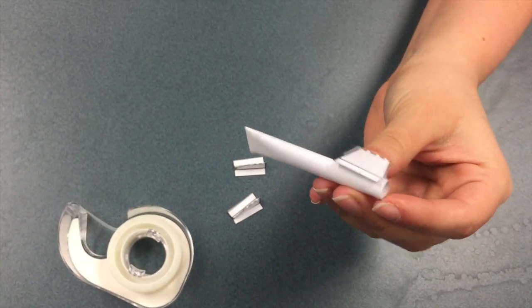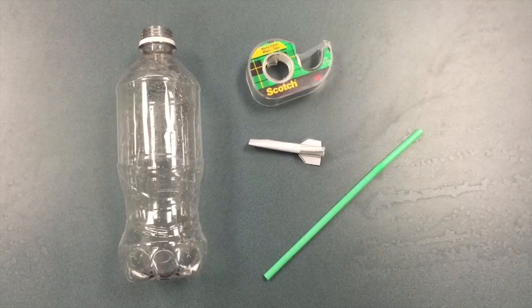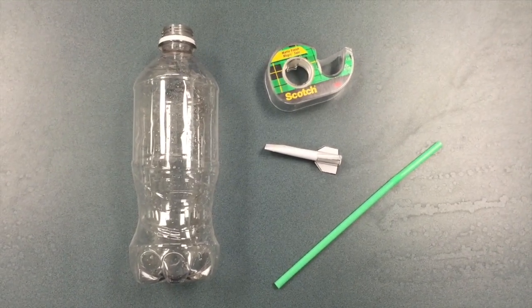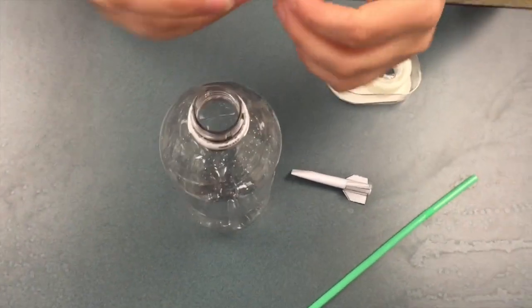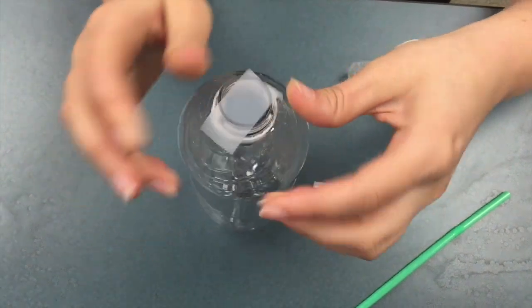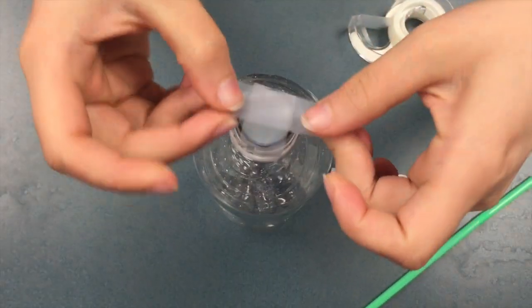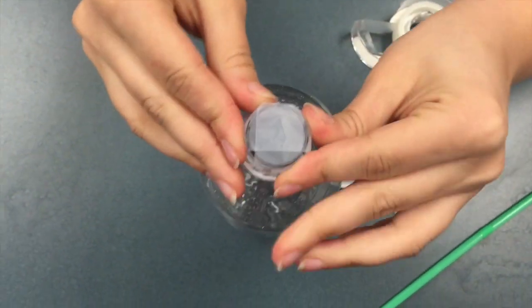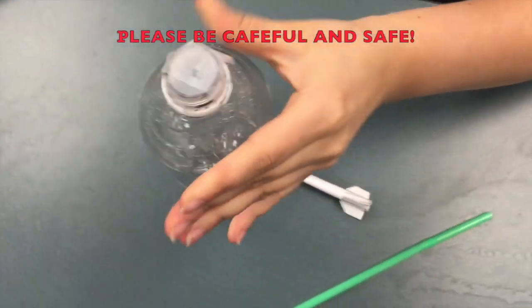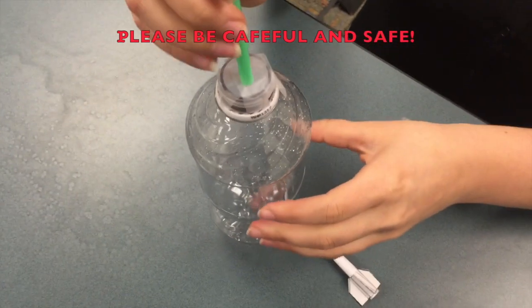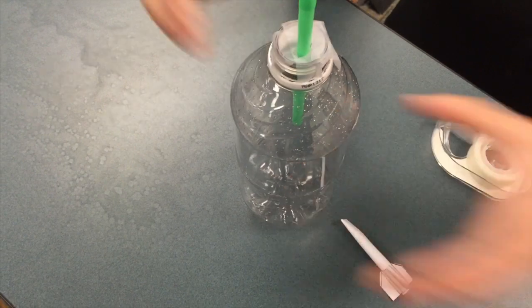So now we'll make our launcher. You take your empty water bottle, some tape, you cover the nozzle of the water bottle with your tape, just two or three pieces should do the trick, and then you're going to make just a little hole in that tape and the straw goes through the hole, and there's your launcher.